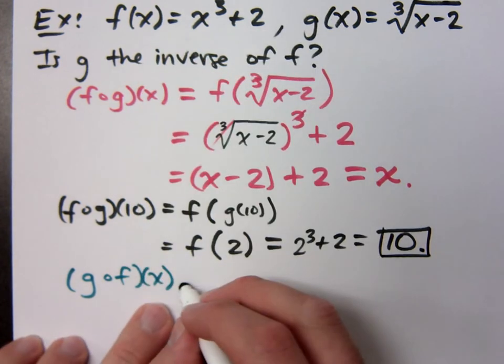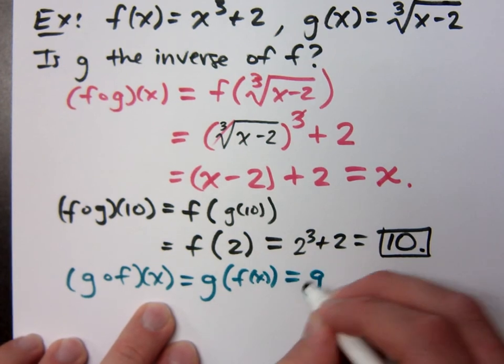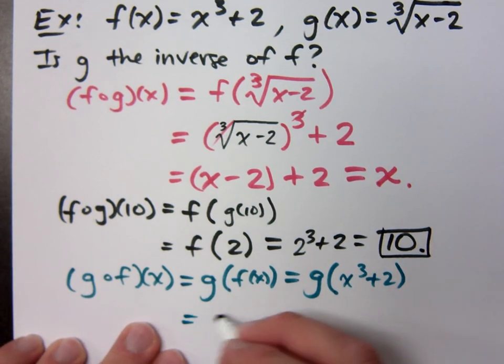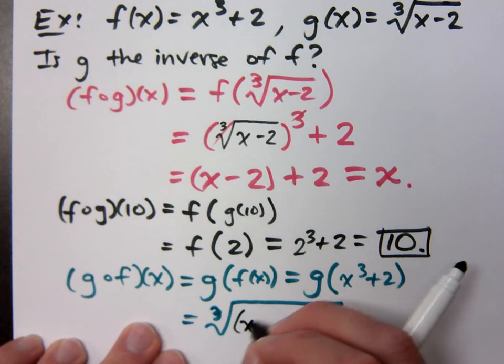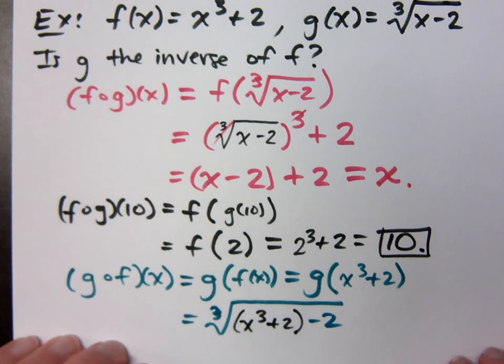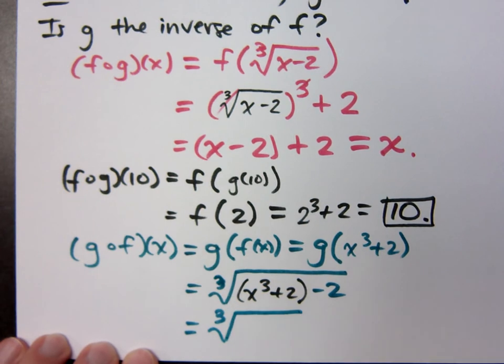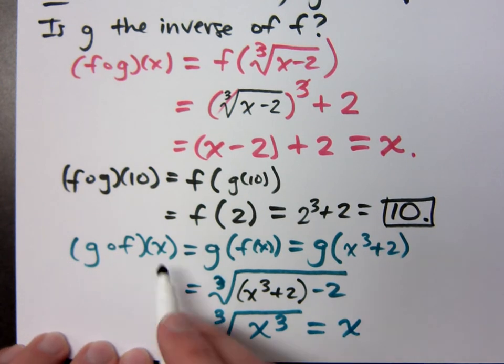If I compose it the other way, and I do g of f of x, which means g of x cubed plus 2, that means I'm plugging into my cube root, I'm plugging in x to the third plus 2. When I do this work, I get the cube root of what? Of x cubed, and what do I get out? I get x. So this is my original input value.